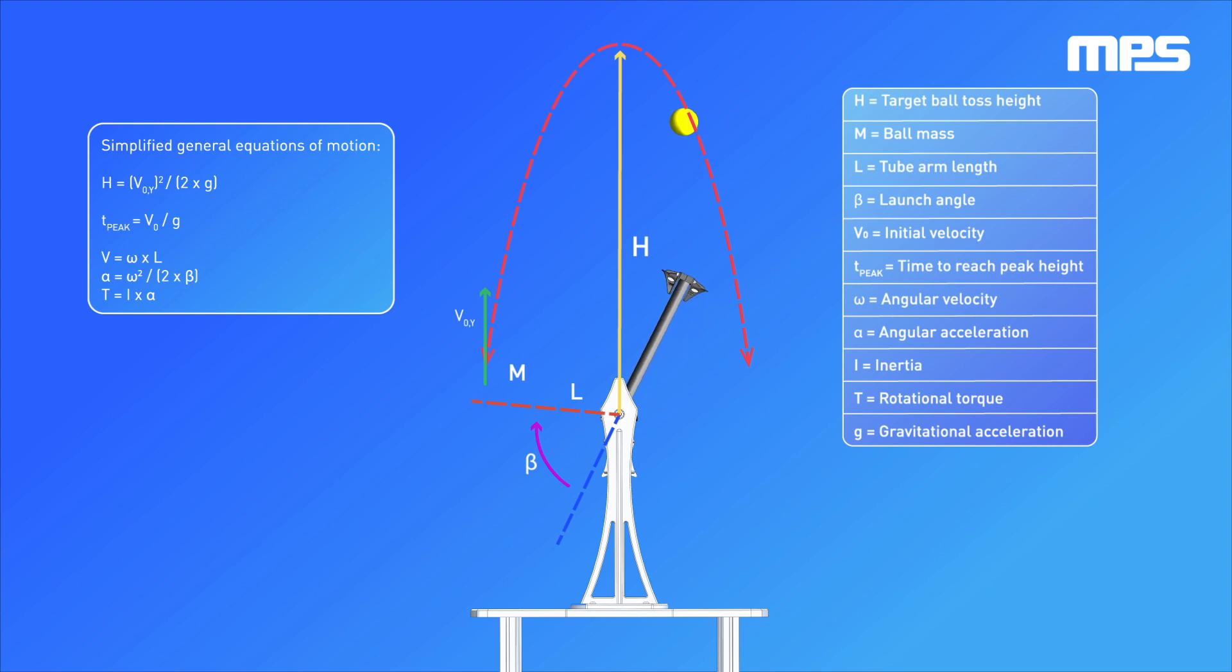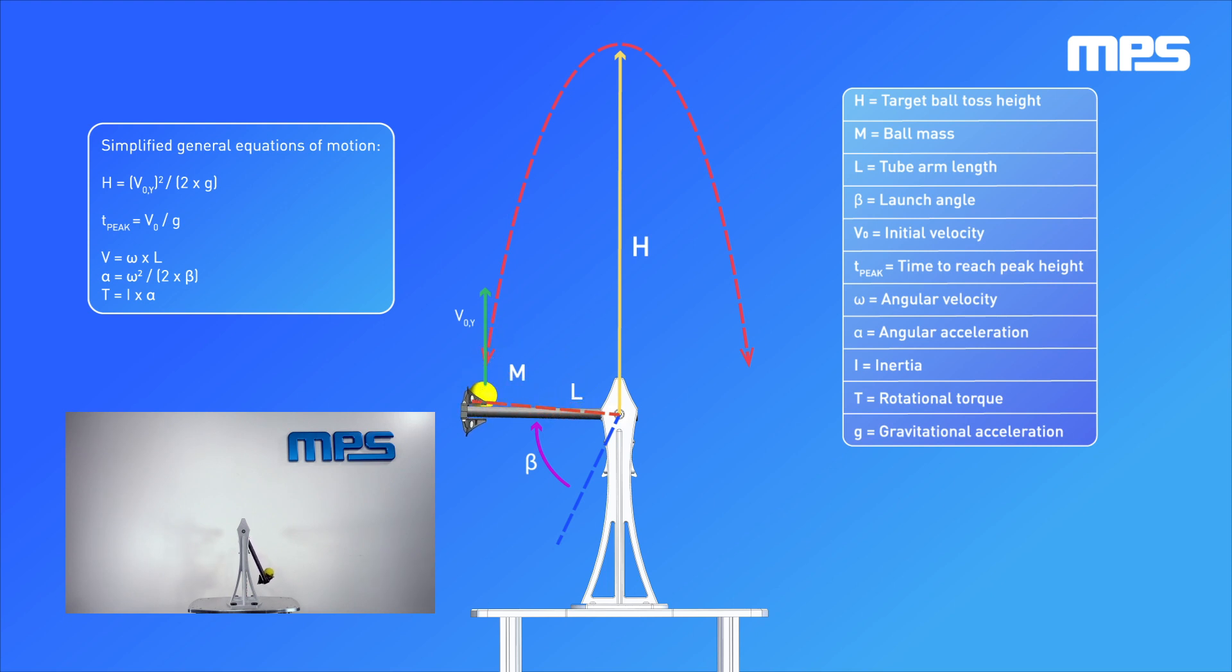For simplicity in our calculations, we'll neglect the effects of air resistance and assume the system consists only of rigid bodies. With this method, we are able to calculate the required rotational velocity and torque needed to achieve the desired flight path.